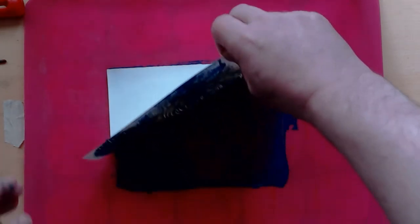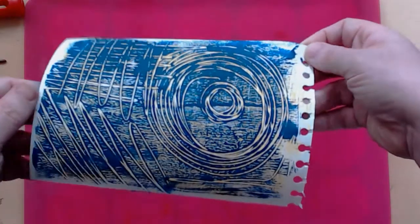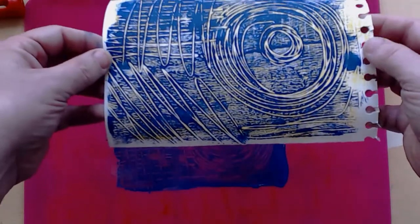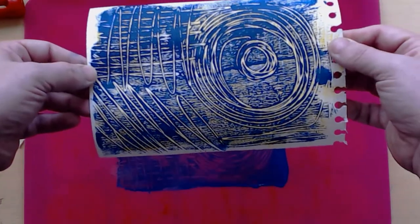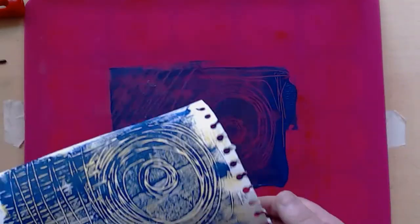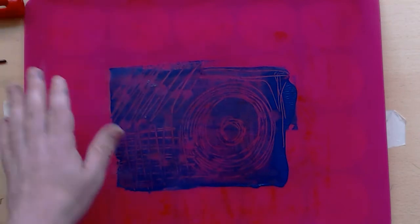Let's pull up and see what we've got now. So we're starting to get some interesting patterns coming through because we've got the yellow coming through the dark blue.